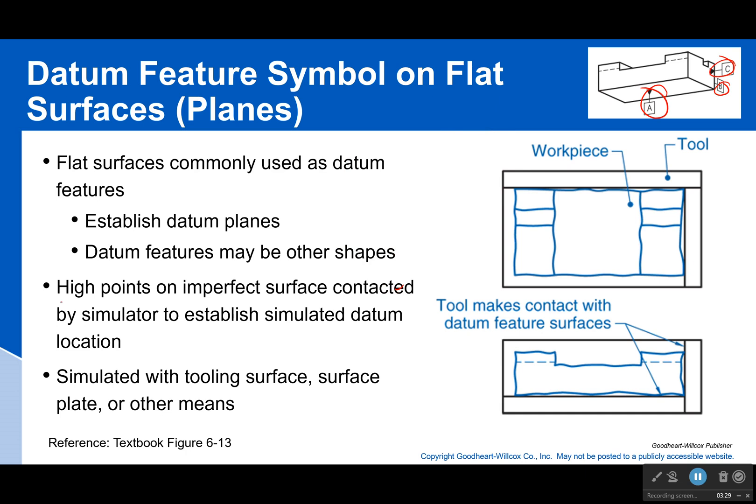Now the high points on my imperfect surface are going to establish the simulated datum location. Okay, remember that's going to be those high points. Let's talk about that true geometric counterpart. If I had some perfect plane and I set my workpiece on it, that's what this workpiece would actually be touching at - those highest points. It can be simulated with a whole lot of different things, but you know with this class at least it would be only a tooling surface if we do it. But there's also lots of digital methods.